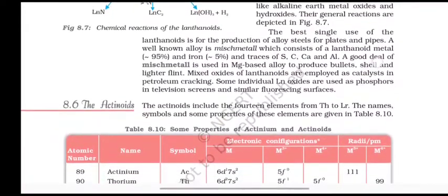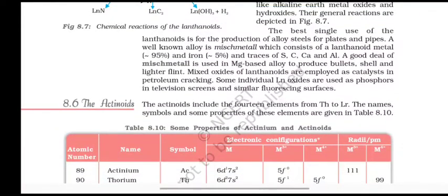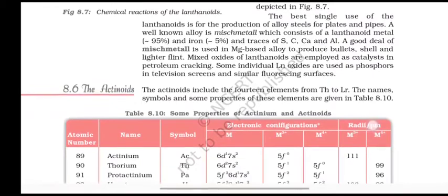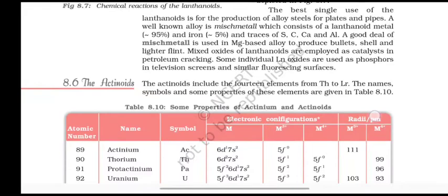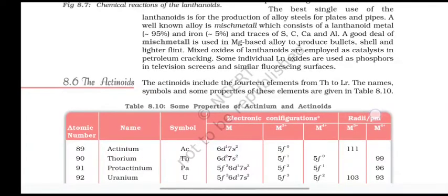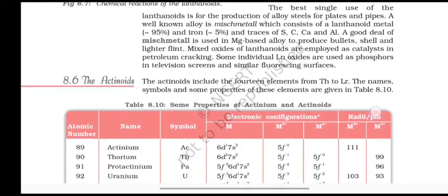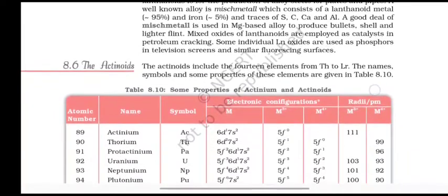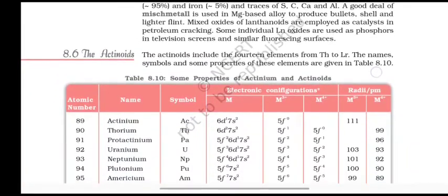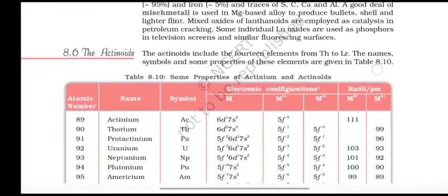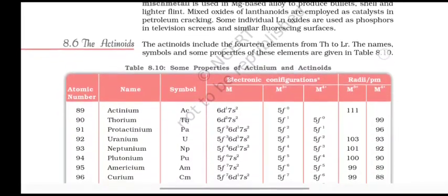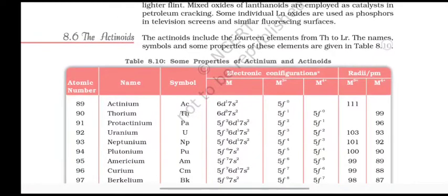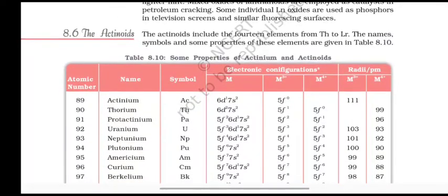The best single use of lanthanoids is for production of alloy steels for plates and pipes. A well-known alloy is misch metal, which consists of lanthanide metals and iron, and traces of S, C, calcium, and aluminum. A good deal of misch metal is used in magnesium-based alloy to produce bullets, shells, and lighter flints. Mixed oxides of lanthanides are employed as catalysts in petroleum cracking. Some individual lanthanide oxides are used as phosphors in television screens and similar fluorescing surfaces.